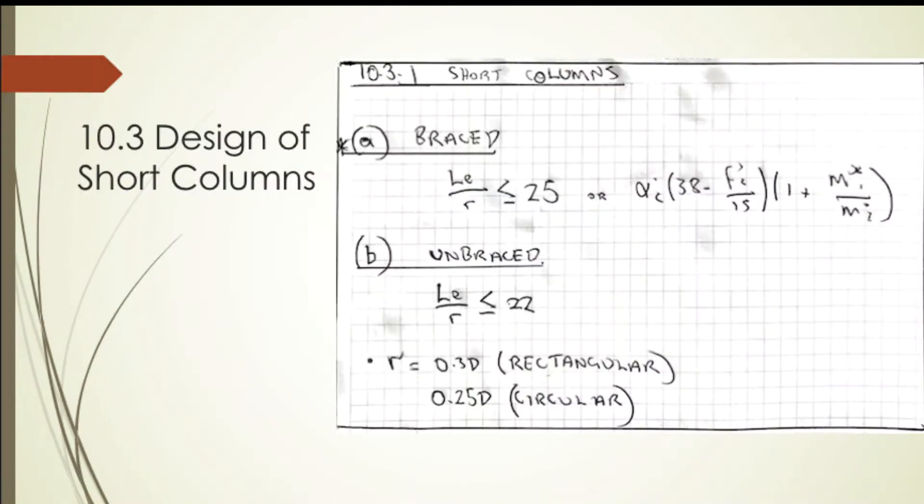In section 10.3, we have the design of short columns. For braced columns, if the effective length divided by the radius of gyration (L_e/r) is less than 25, it's deemed short. Alternatively, there's a more complicated method using alpha_c, the strength of the concrete, and the ratio of the bending moments at the top and bottom of the column.